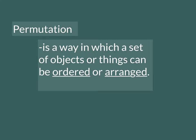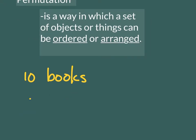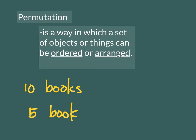Okay, so what is permutation? Permutation is a way in which a set of objects or things can be ordered or arranged. For instance, if we are given ten books but a shelf can only accommodate five books, in how many ways can you arrange five books on the shelf coming from the ten books?